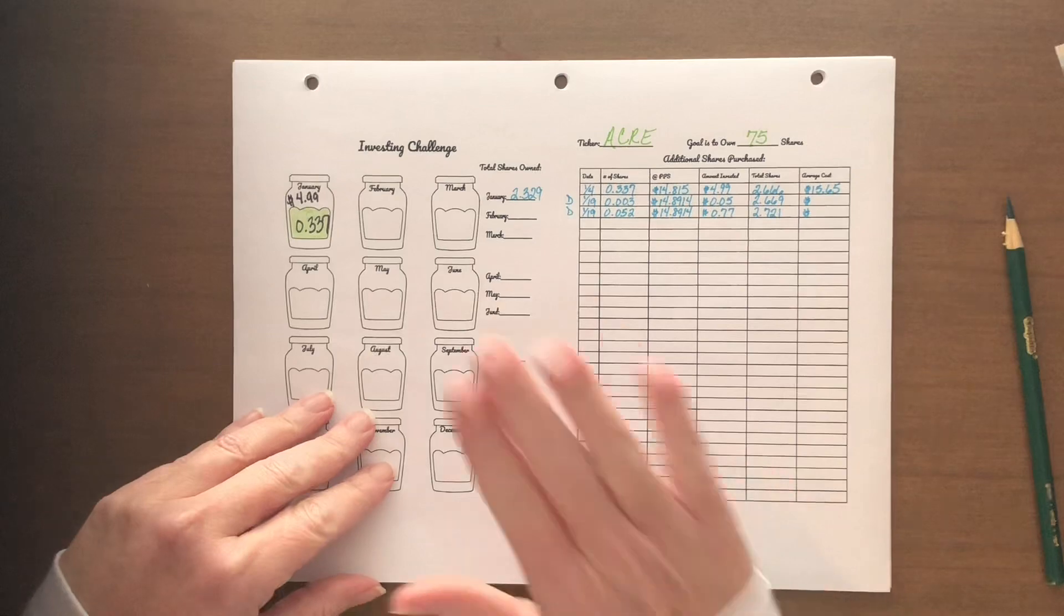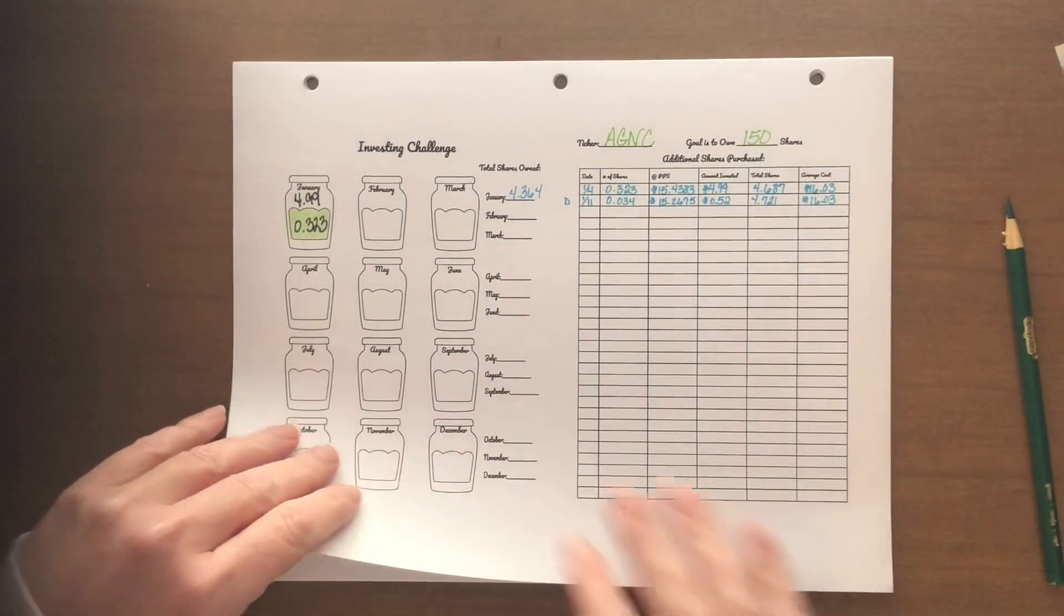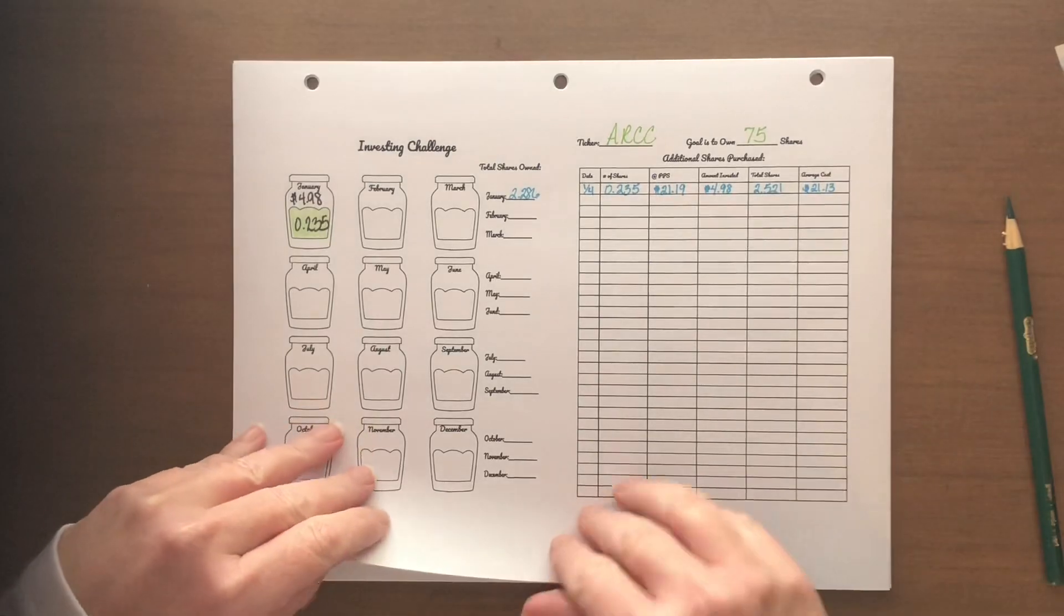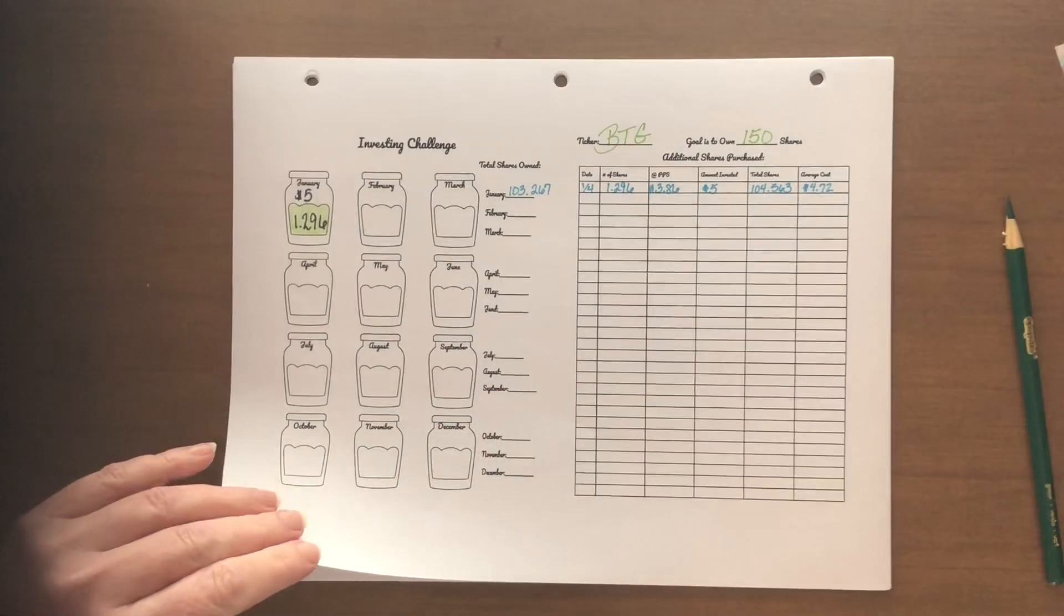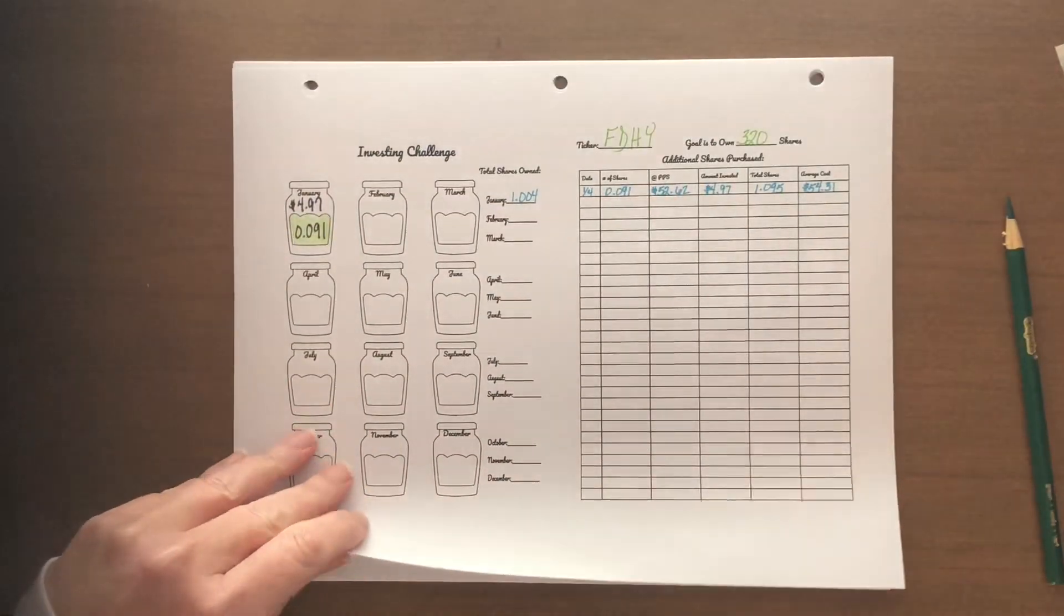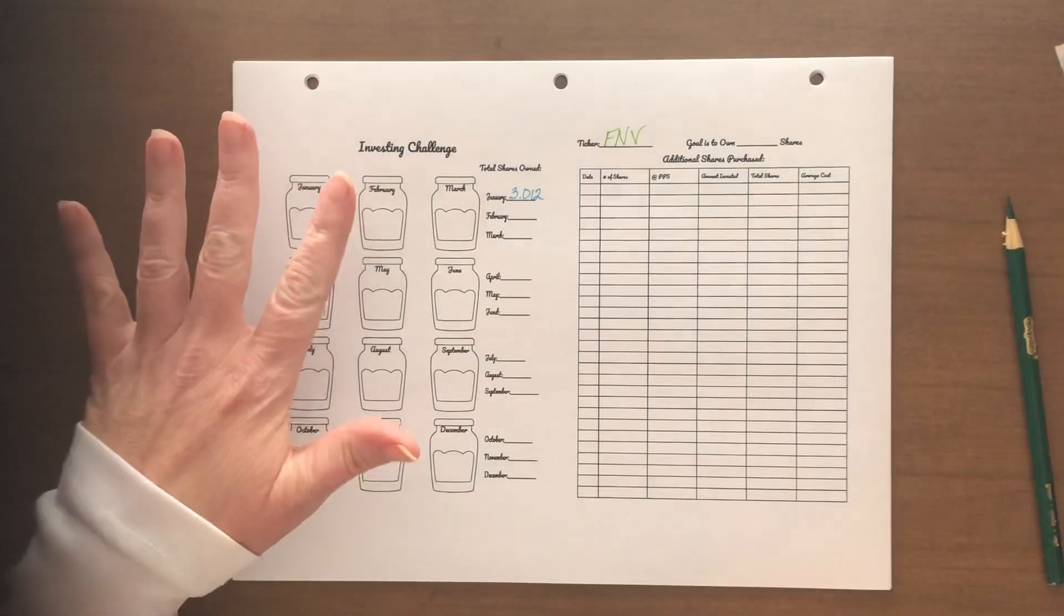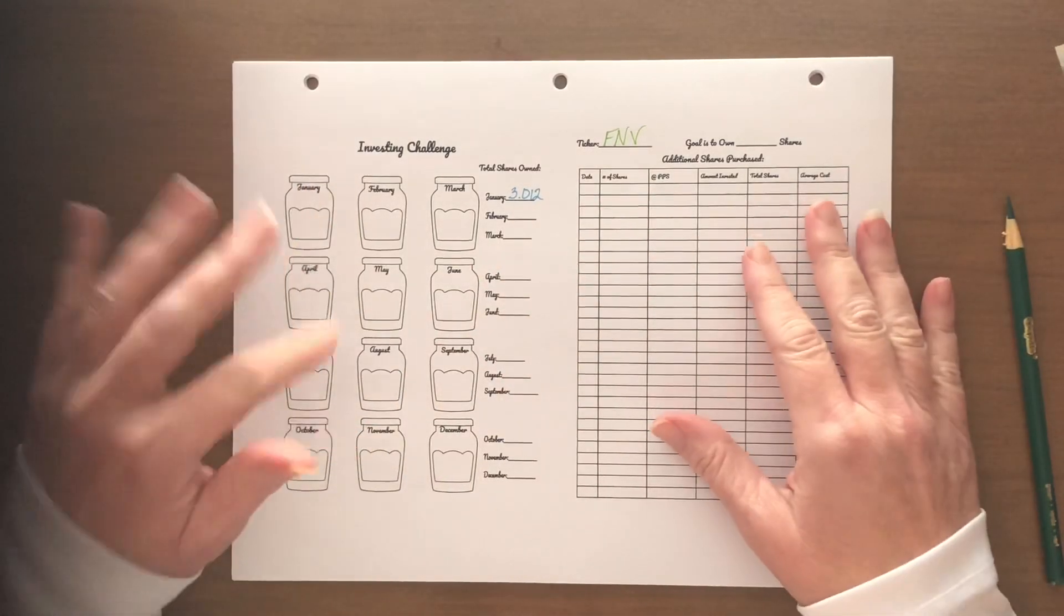So we started the month off with ACRE, AGNC, ARCC, BTG, EPD, and FDHY. All were able to get their $5 or roughly $5 worth of shares.